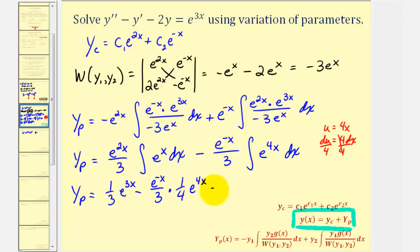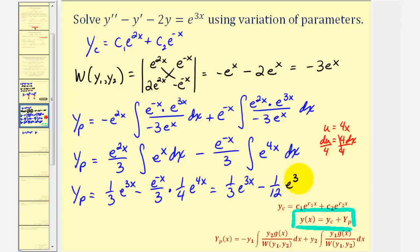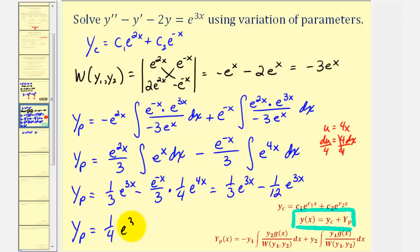Simplifying: we have one-third e to the three x. Then minus one-twelfth times e to the negative x times e to the four x — adding the exponents gives another e to the three x. These are like terms. One-third equals four-twelfths, and four-twelfths minus one-twelfth is three-twelfths, which is one-fourth. So y sub p equals one-fourth e to the power of three x.